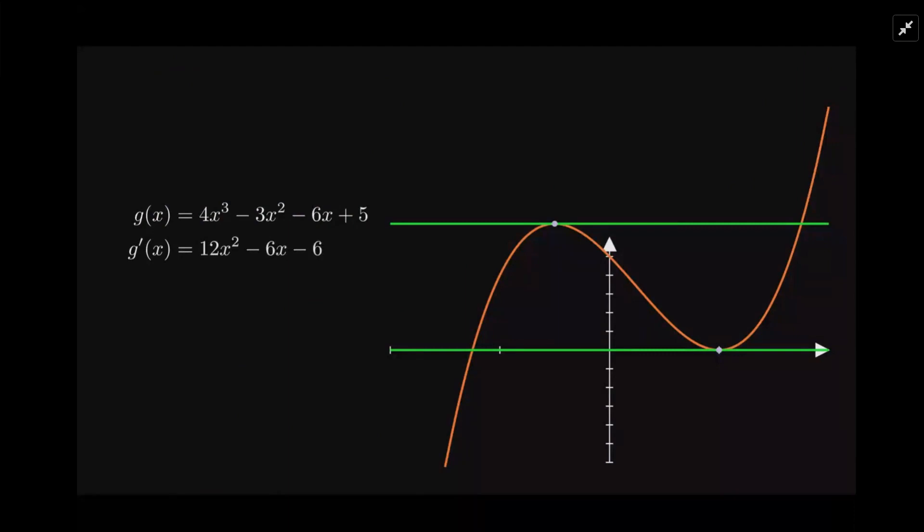And if we set it equal to zero, we'll find the x values of these points. Okay, so we get a quadratic here. We can simplify it by dividing out a six. We have a common factor of six there. So we get this 2x² - x - 1.